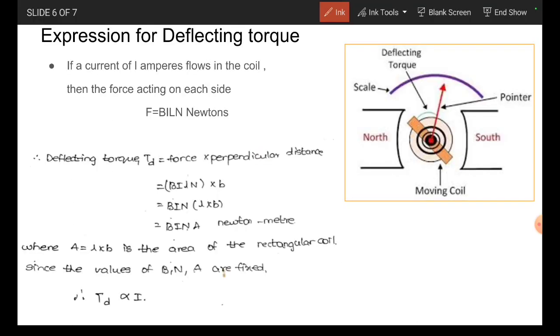The expression for deflecting torque is: if a current of I amperes flows in the coil, then the force acting on each side, F is equal to BiLN.